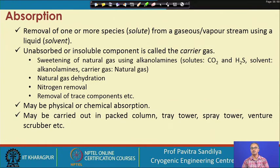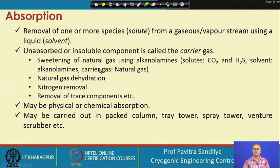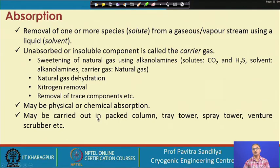The carrier gas carries the various species which need to be separated by absorption. There are several examples of absorption processes: sweetening of natural gas, where the solute is carbon dioxide and H2S, the solvent is some kind of amine, and the carrier gas is natural gas — meaning no component other than CO2 and H2S is absorbed by the solvent. Other examples include dehydration of natural gas, removal of nitrogen from natural gas, and removal of trace components.